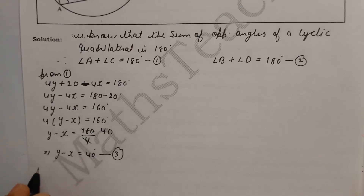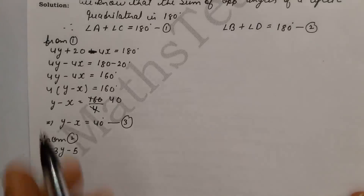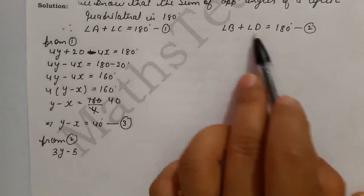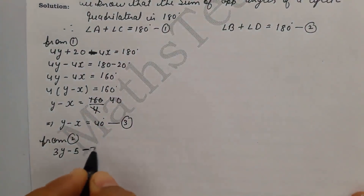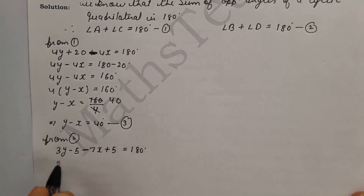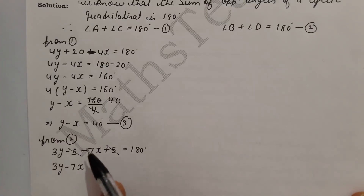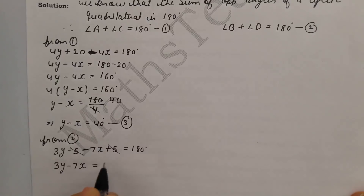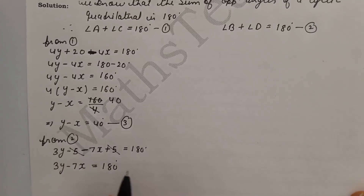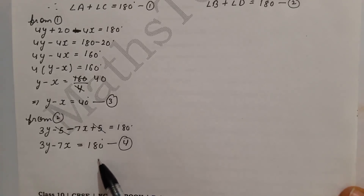Now we substitute into equation 2. Angle B equals 3y minus 5 and angle D equals minus 7x plus 5. So we get: 3y minus 5 plus minus 7x plus 5 equals 180°. Simplifying: 3y minus 7x, the plus 5 and minus 5 cancel to zero, giving us 3y minus 7x equals 180°. This is equation 4.